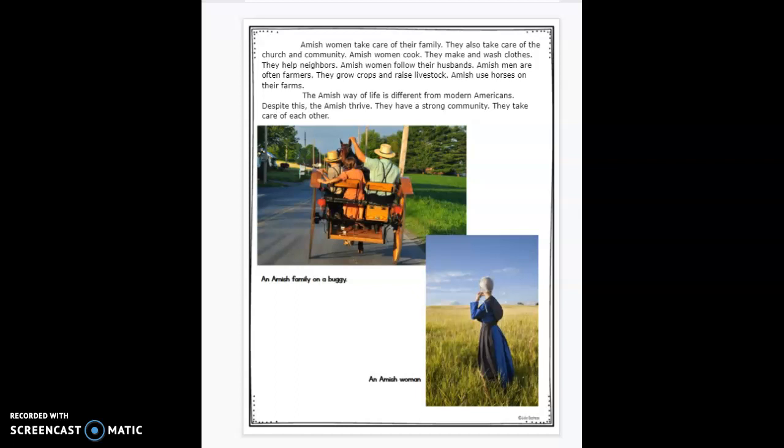Amish women take care of their family. They also take care of the church and the community. Amish women cook. They make and wash clothes. They help neighbors. Amish women follow their husbands. Amish men are often farmers. They grow crops and raise livestock. Amish use horses on their farms. The Amish way of life is different from modern Americans. Despite this, the Amish thrive. They have a strong community to take care of each other. And there's a picture of an Amish family on a buggy.